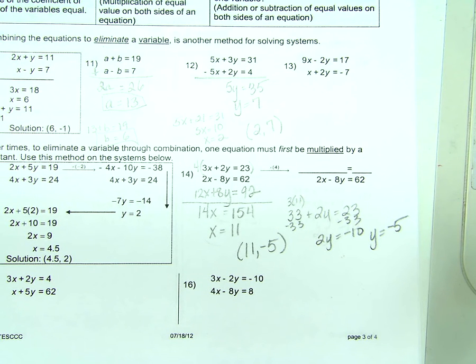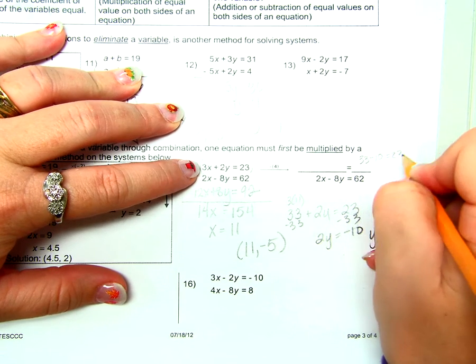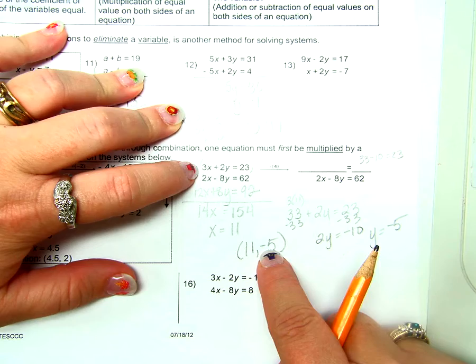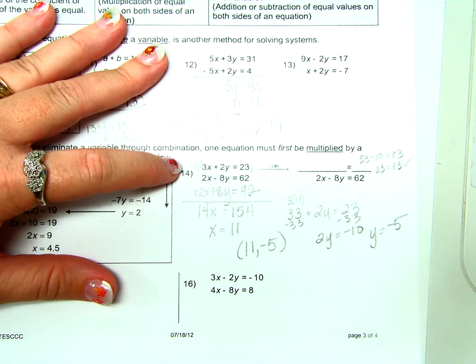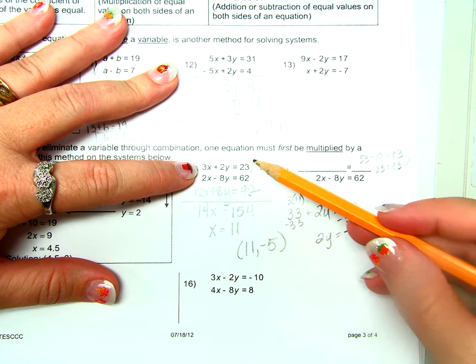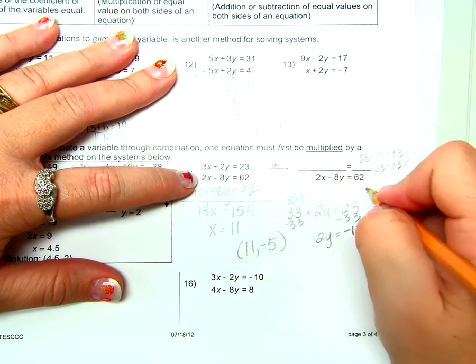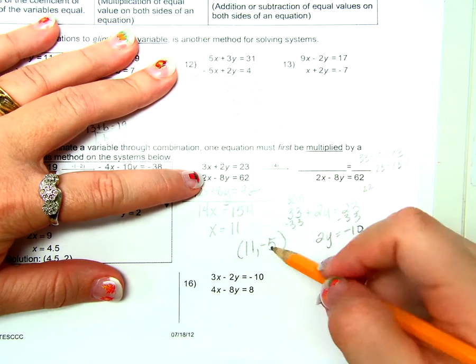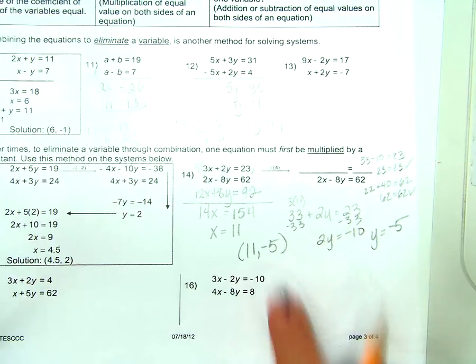Prove it. 33 minus 10 equals 23. 3 times 11, 2 times negative 5. What is 33 minus 10? Does 23 equal 23? So it must be the right answer. Not yet. They have to work for both. And chances are if I plugged it into the top, when I plug it back in, it'll work because that's the one I solved for. So especially plug it into the other one just to make sure. So 2 times 11 is 22. Negative 8 times negative 5, so plus 40 equals 62. Does 62 equal 62? Is that the right answer? Yes.